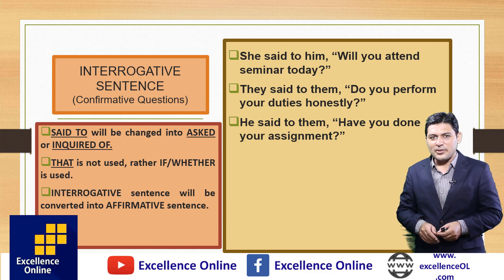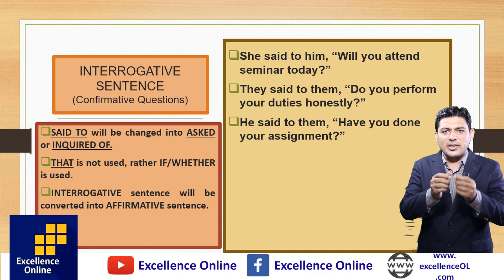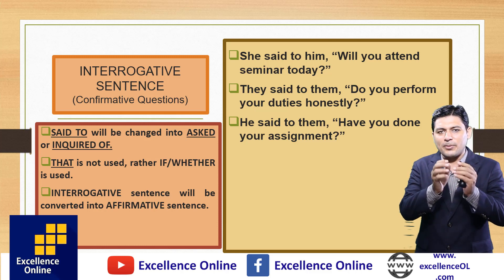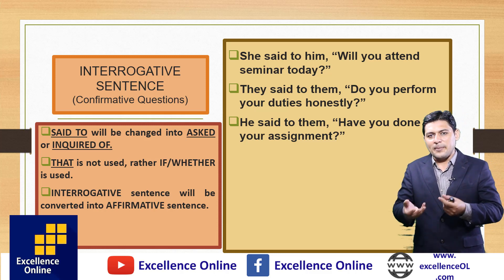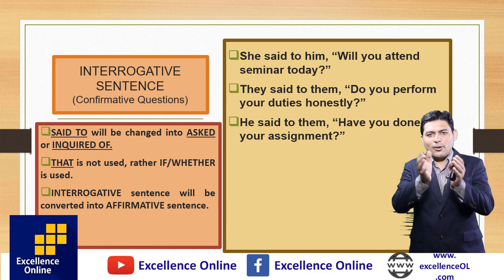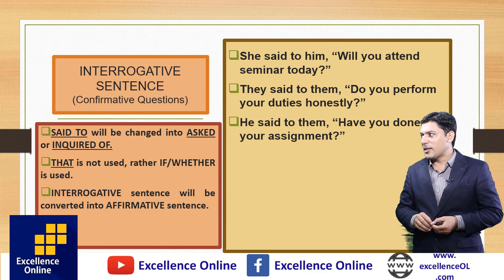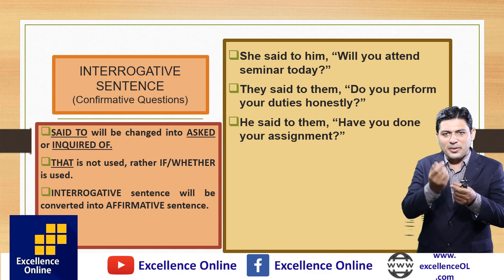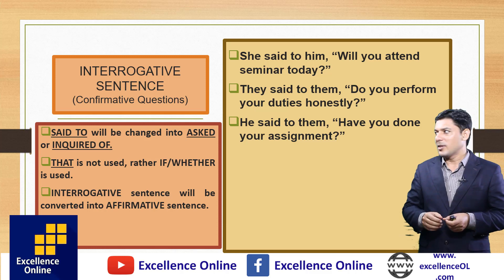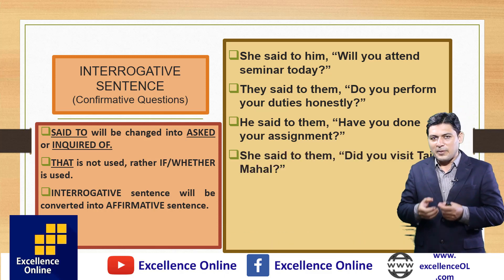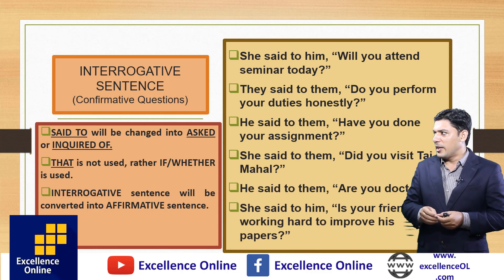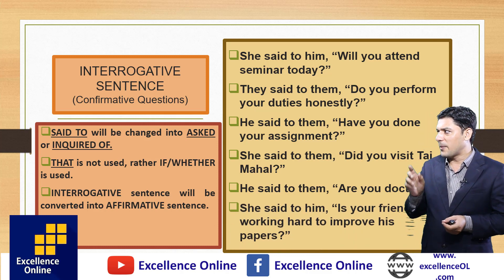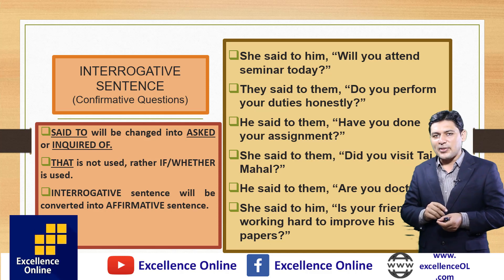Another example: 'He said to them, have you done your assignment?' Same rule and principles apply. 'He said to them' becomes 'he asked them.' For joining, we use 'if' or 'whether.' The interrogative converts to affirmative. 'You' changes to 'they' according to the object 'them.' Result: 'He asked them if they had done their assignments.' Note 'have' changes to 'had.'